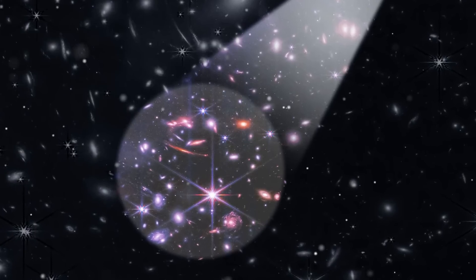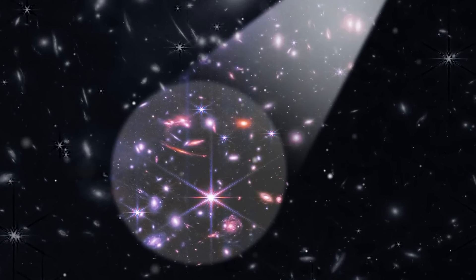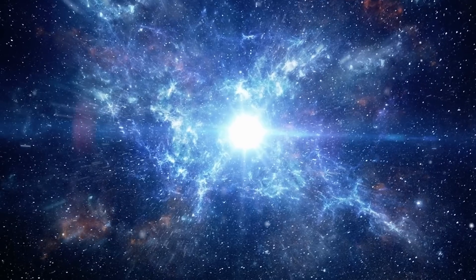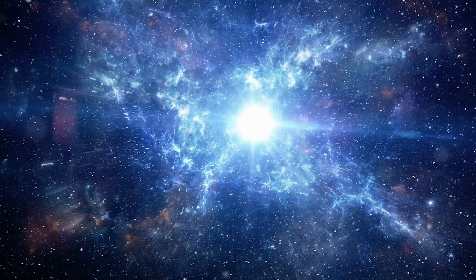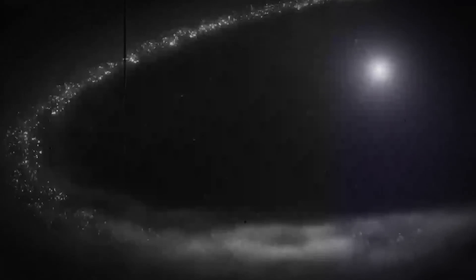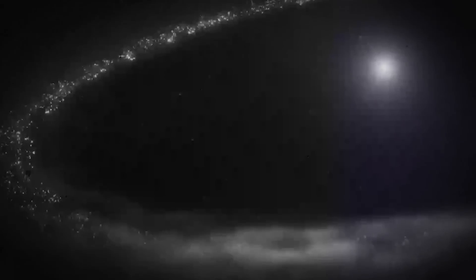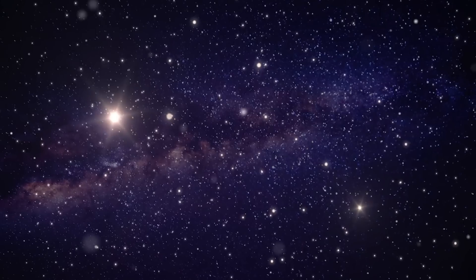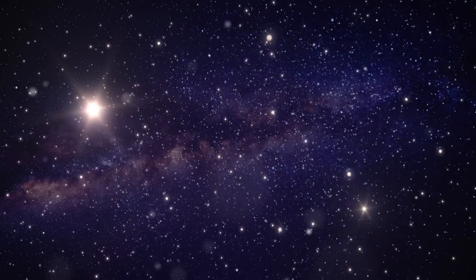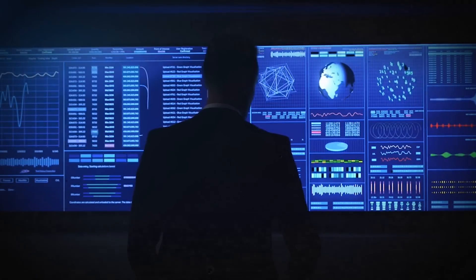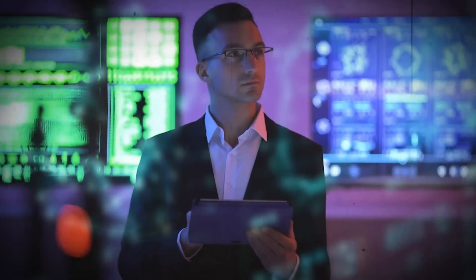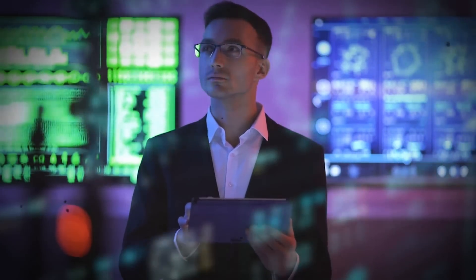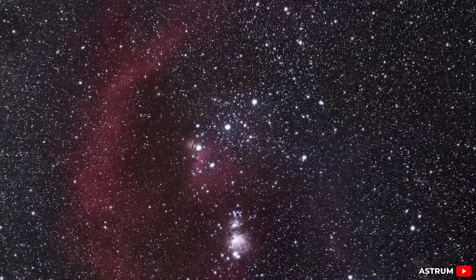Webb's mission goes far beyond taking pretty pictures. It's designed to answer some of the biggest questions out there. When did the first galaxies form? How do stars and planets come together? What are distant exoplanets made of? And could they possibly host life? Already, Webb has detected water ice on distant objects and captured detailed images of exoplanets. But with technology moving as fast as it is, some are beginning to wonder, could another kind of machine change the game?